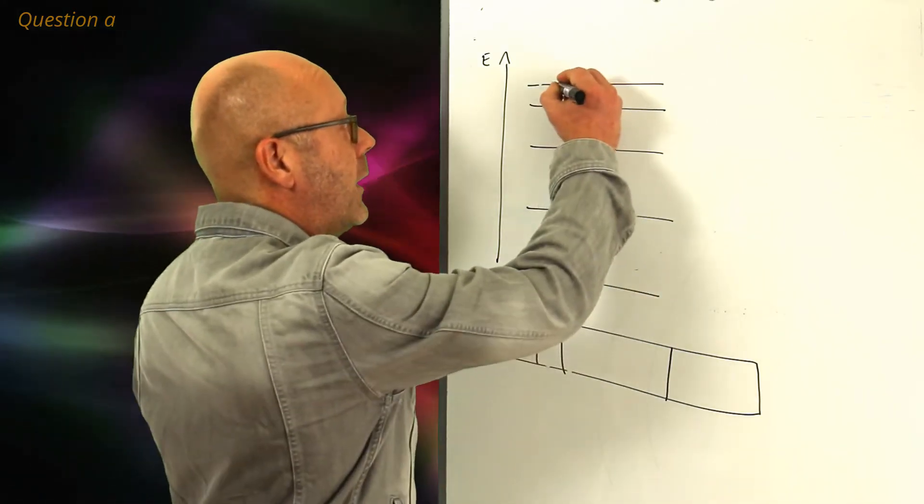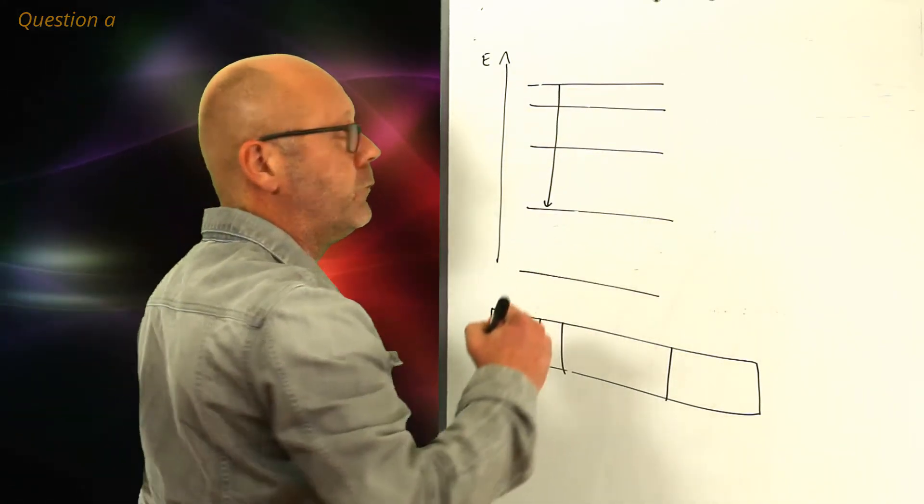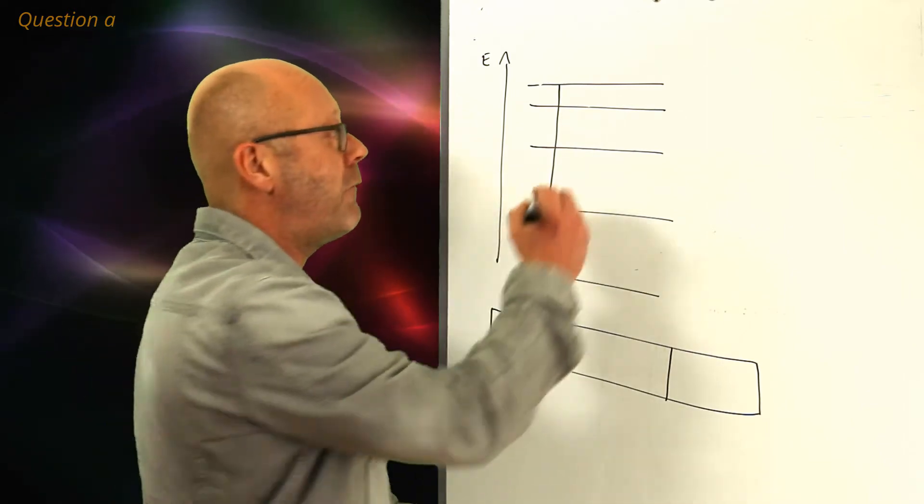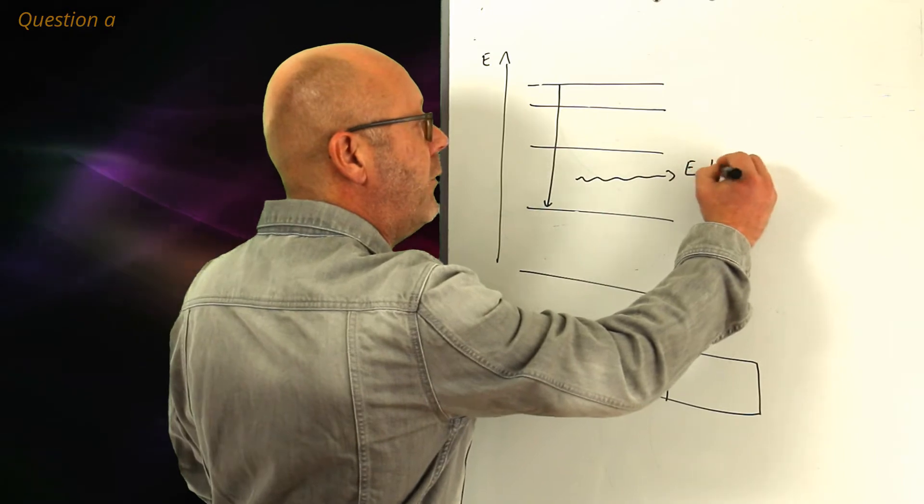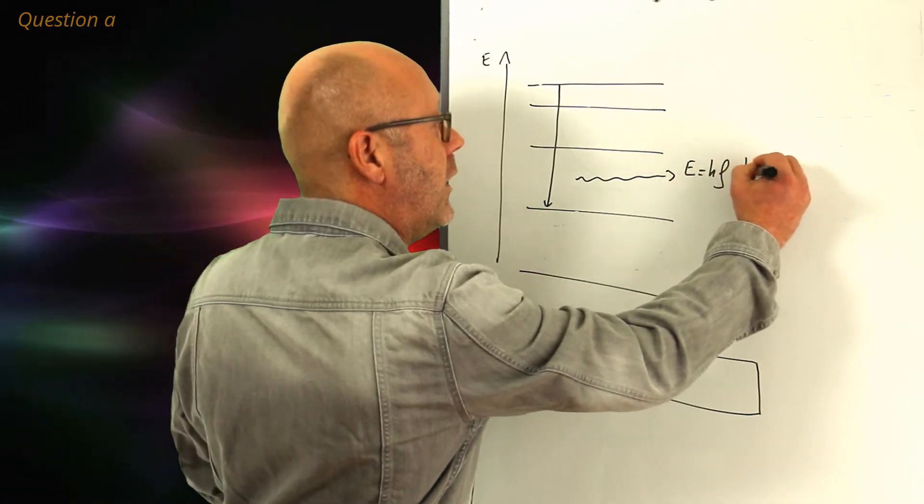Well, first you explain that when an atom releases energy, it does it under the form of a photon of energy E equals hf equals hc over the wavelength.